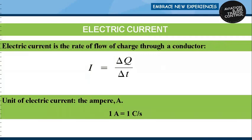Electric current is the rate of flow of charge through a conductor. It is given by ΔQ / Δt, which is charge divided by time. The SI unit of current is the ampere (A). One ampere equals one coulomb of charge flowing in one second.